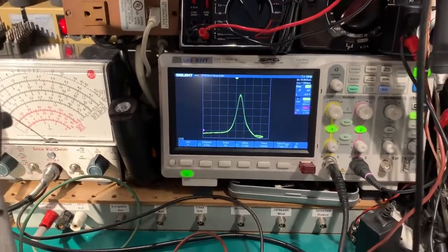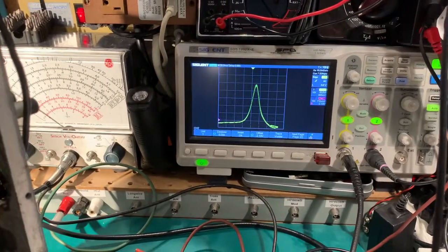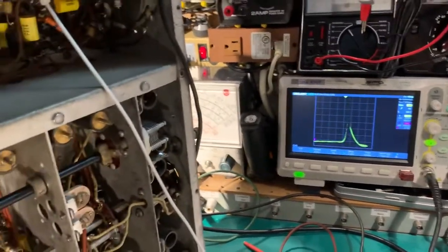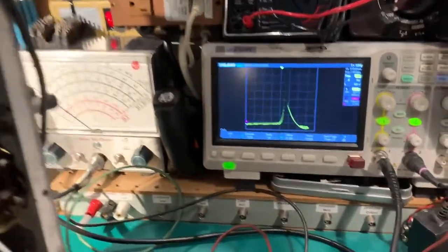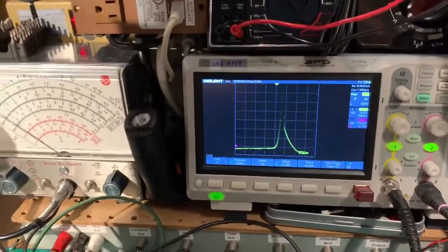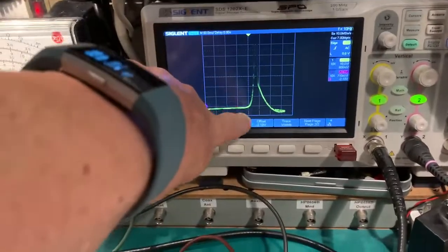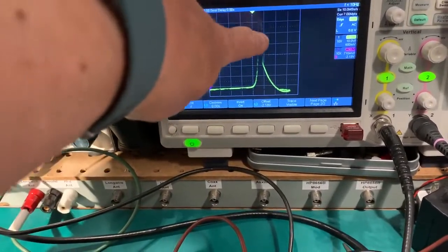Now switch to the crystal. This is the wide crystal position. You can hear the difference in tone on the speaker there and it's difficult to see on the scope because it's very faint but you've got a very sharp peak here now.